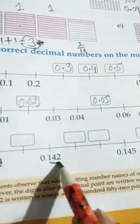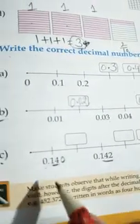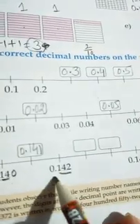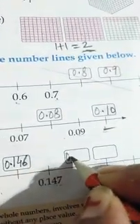Now Part C. Here students you can see 0.14 — after the decimal two digits are there, but in the next we can see after the decimal three digits are there. So here we will complete three digits after the decimal by putting one zero: it is 0.140. The next will be 0.141, 0.142, 0.143, 0.144, 0.145, 0.146, 0.147, 0.148, 0.149, and 0.150.